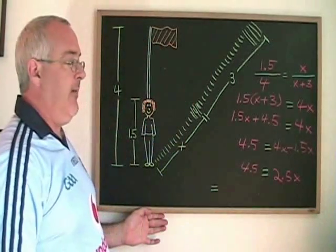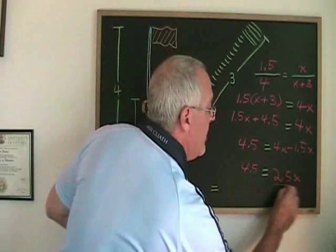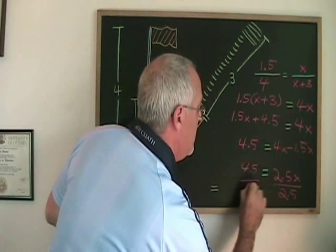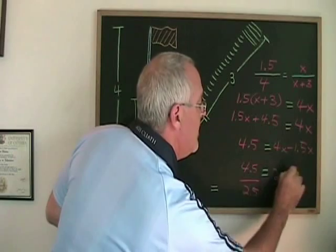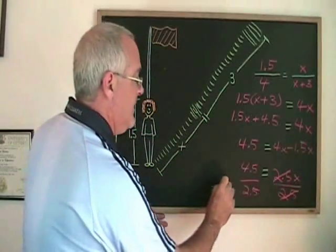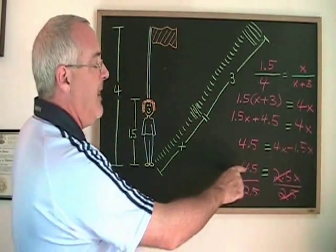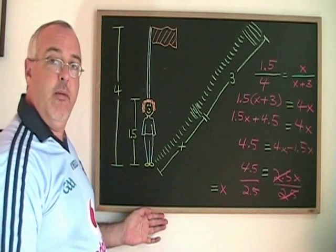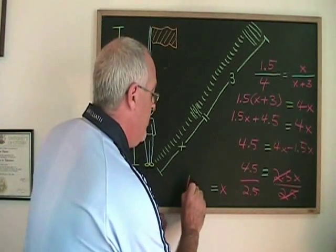And now if I divide both sides by 2.5, these cancel. My x is isolated and is equal to 4.5 divided by 2.5, which is 1.8.